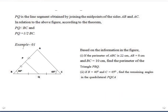Let's move to our first example. Based on the information in the figure: Part 1 — if the perimeter of triangle ABC is 22 cm, AB equals 8 cm, and BC equals 10 cm, find the perimeter of triangle PBQ. Part 2 — if angle B equals 40 degrees and angle C equals 65 degrees, find the remaining angles in the quadrilateral PQCA.